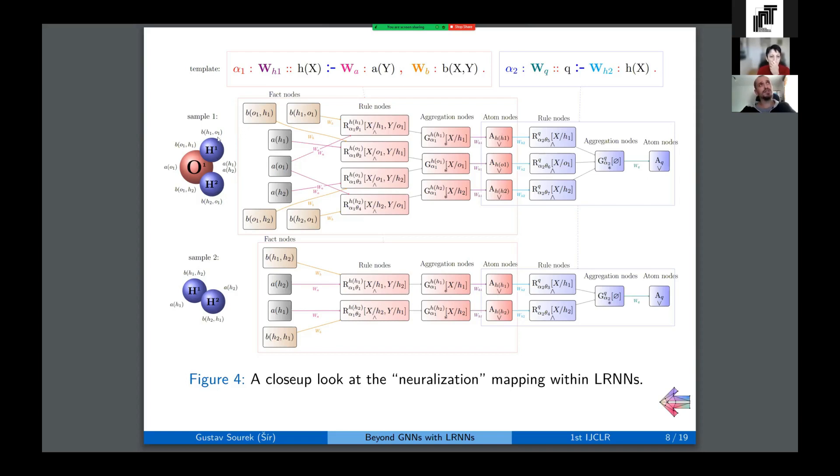The structure is as follows. We start with the fact nodes, which correspond directly to the facts given in the logical samples. These form input into so-called rule nodes, which correspond directly to the groundings of the rules in the template. Then we have aggregation nodes, which aggregate the groundings with the same ground head literal in the rule. And then these induce so-called atom nodes, which correspond to the newly induced logical atoms from the head of the rules. And then it continues recursively in the same fashion for the second rule. Now the thing to note here is the transfer of the parameters from the template into the ground model, such as in MLNs, induces some weight sharing.